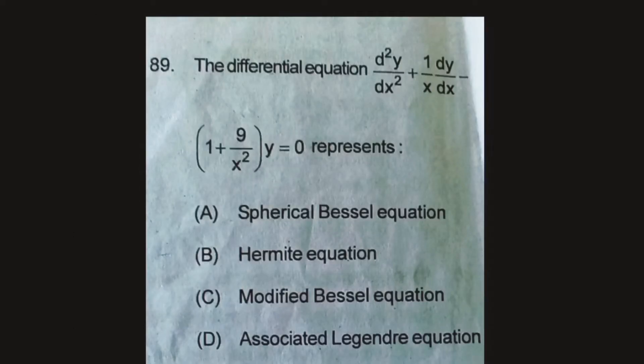In question number 89, the differential equation d square y by dx square plus 1 by x dy by dx plus 1 plus 9 by x square y is equal to 0.